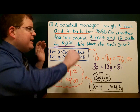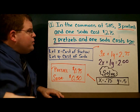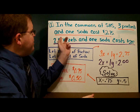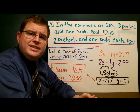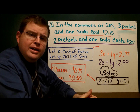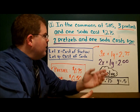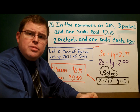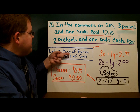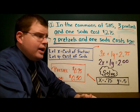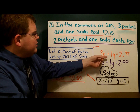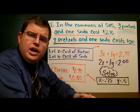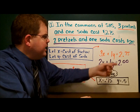In example two, we're selling pretzels and sodas down in the commons. Three pretzels and one soda is $2.75, and two pretzels and one soda is $2.00. What is the cost of a soda and what is the cost of a pretzel? Let x be the cost of a pretzel and y be the cost of a soda. So three times the cost of a pretzel plus one times the cost of a soda gives us 3x plus 1y equals $2.75.